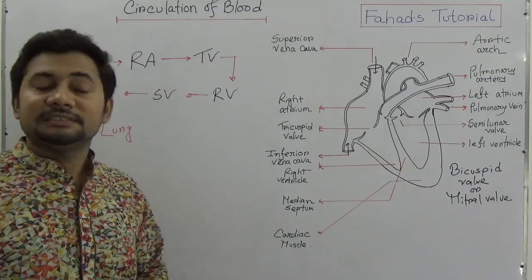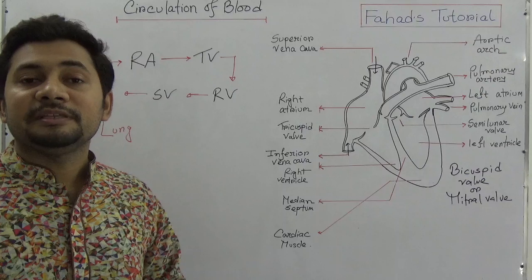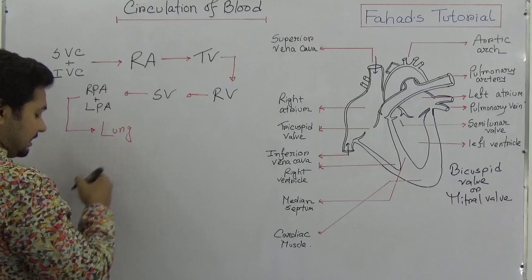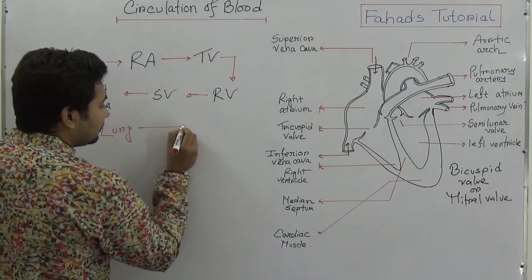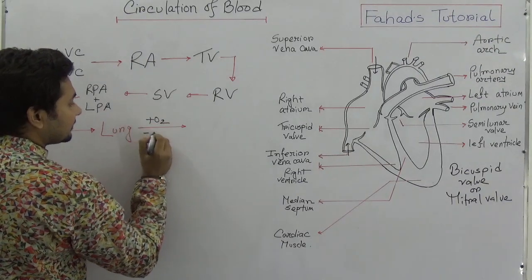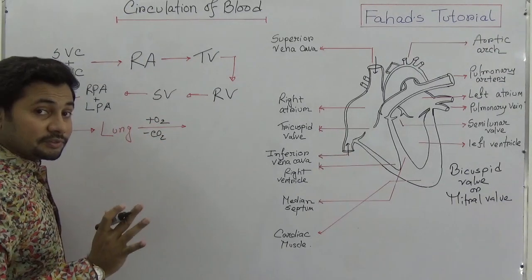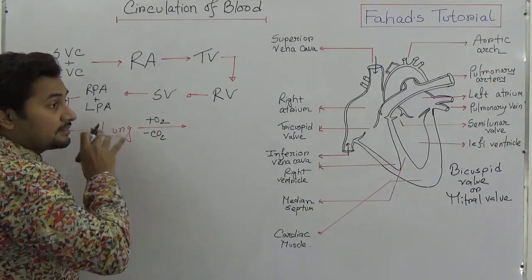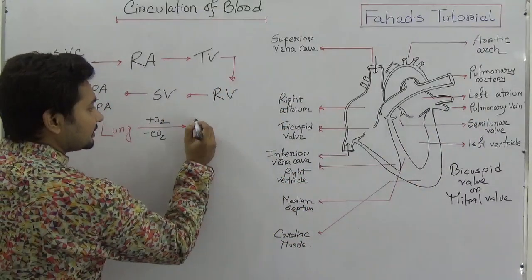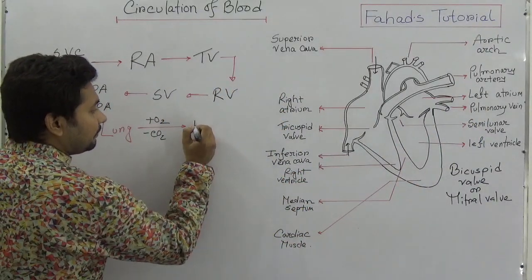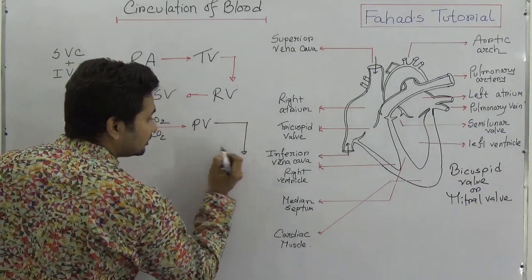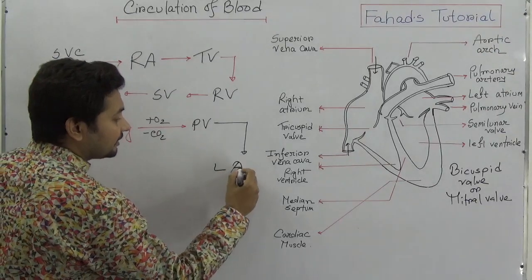In the lungs, there will be an exchange of oxygen and carbon dioxide. When the lungs perform this diffusion — oxygen is added and carbon dioxide is removed — the blood is then sent back through the pulmonary vein to the left atrium.